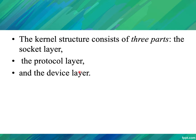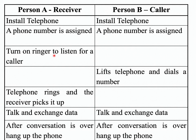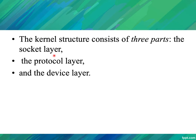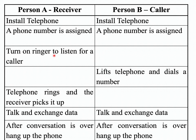The kernel structure consists of three parts: the socket layer, the protocol layer, and the device layer. Through these layers, the two processes communicate with each other. Let's look at a scenario to make sockets easily understandable, and then we'll discuss the different system calls available.